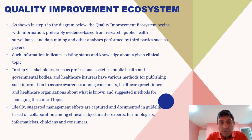As shown in step one of the diagram, the quality improvement ecosystem begins with information, preferably evidence-based from research, public health surveillance, and data mining, and other analysis performed by third parties such as peers. Such information indicates existing status and knowledge about a given clinical topic. In step two, stakeholders such as professional societies, public health and government bodies, and healthcare insurers have various methods for publishing such information to assure awareness among consumers, healthcare practitioners, and healthcare organizations about what is known and suggested methods for managing the clinical topic.